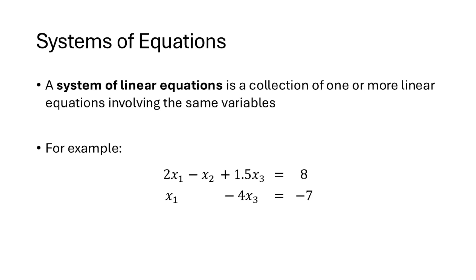Now a system of linear equations is a collection of one or more linear equations that involve the same variables. Here we see an example of a system of linear equations that has two equations and three variables. Notice that the variable x2 is missing from the second equation, but that's okay, and again we could manually insert that if we wanted to with a coefficient of zero.